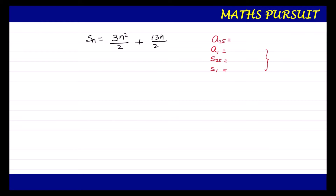The given question is Sn = 3n² upon 2 plus 13n upon 2. Now let us consider the value of n as 1 — we are assuming what happens when n = 1. When n = 1, I can write S1 = 3(1²) upon 2 plus 13 × 1 upon 2, just replacing the value of n in this equation.